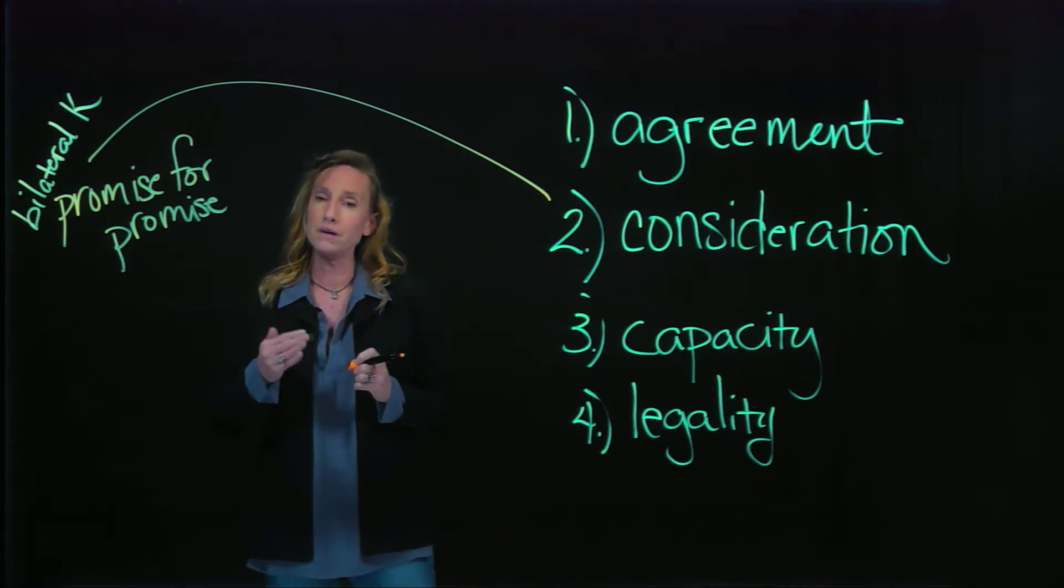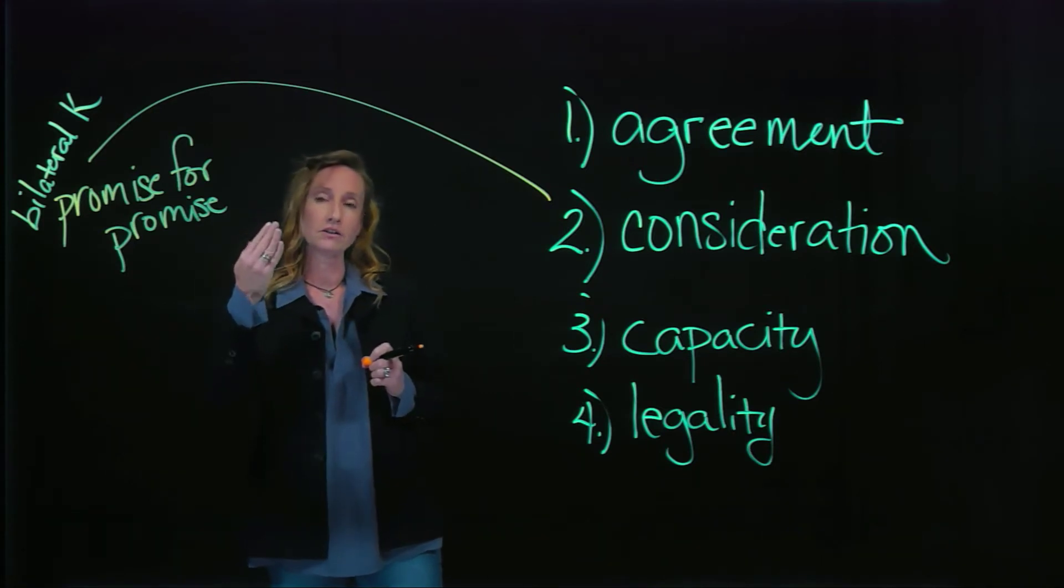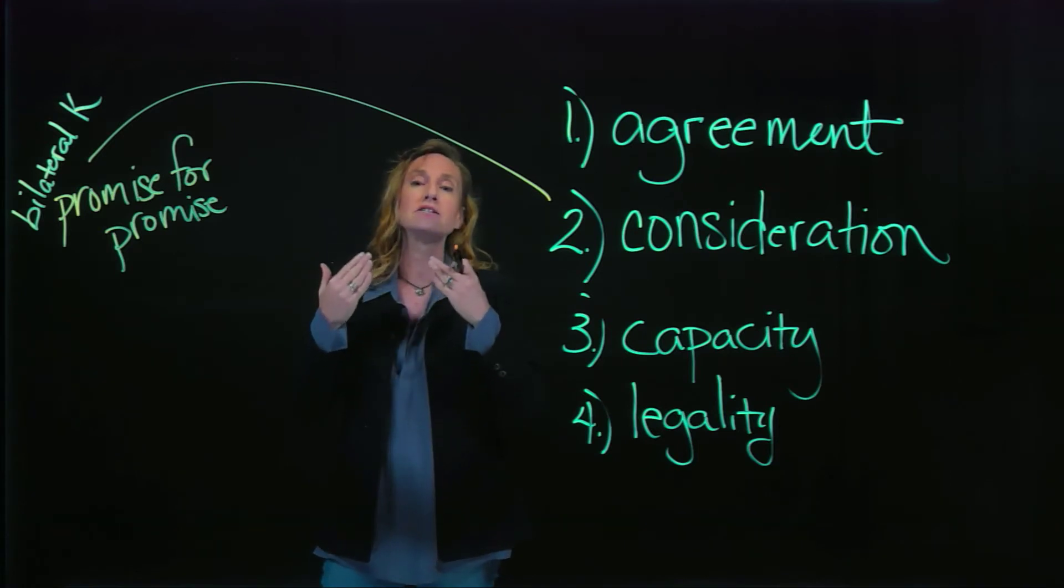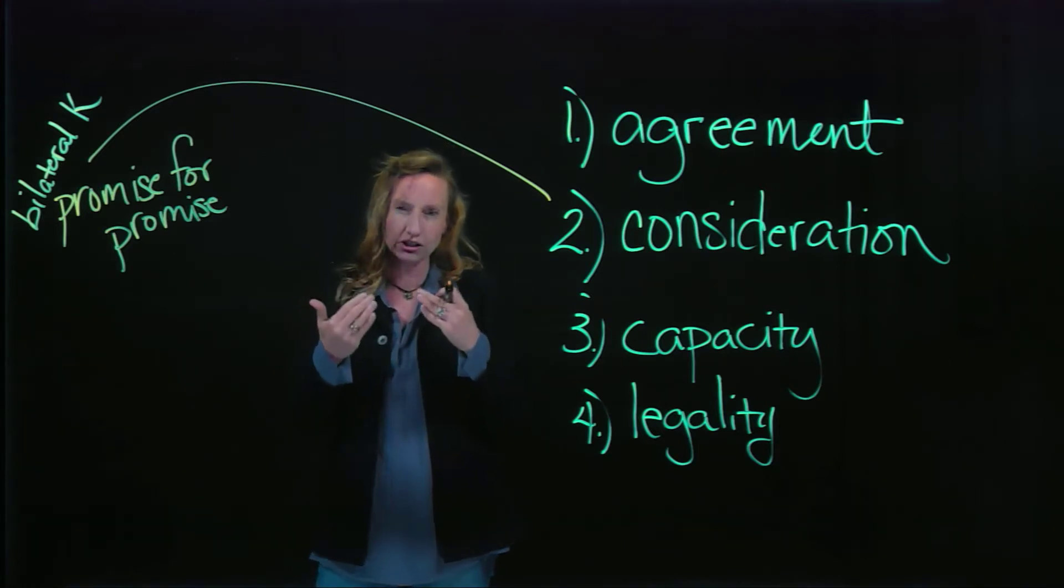So consideration from Bob would be I'm giving up my right to file a lawsuit. And from Sarah would be here is some money. So both sides are giving something of value. They're changing their position.